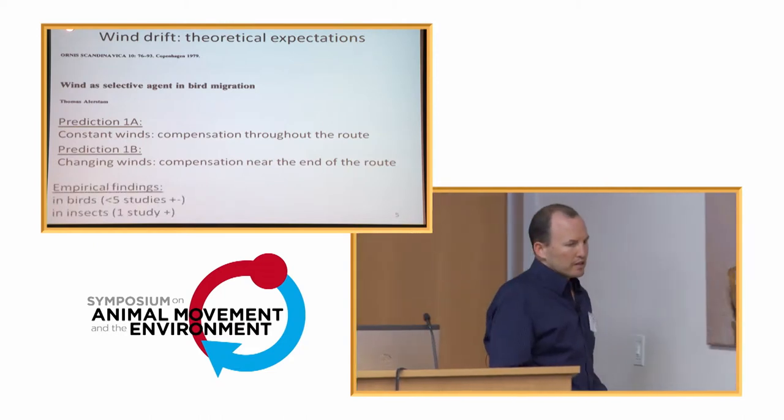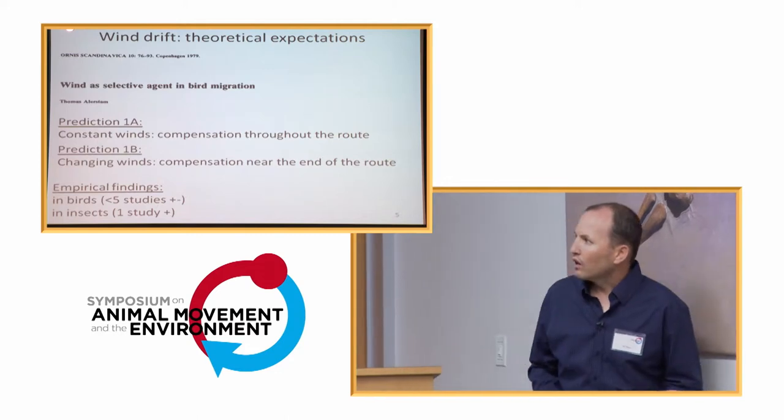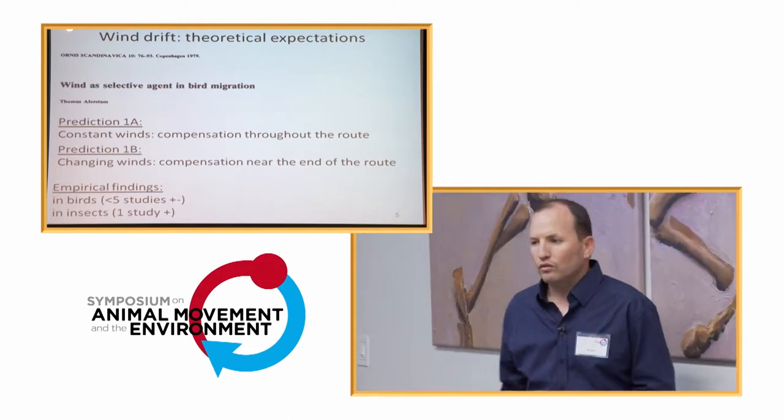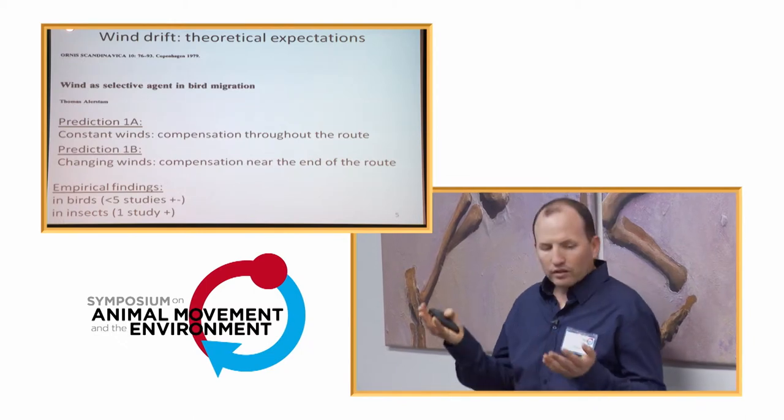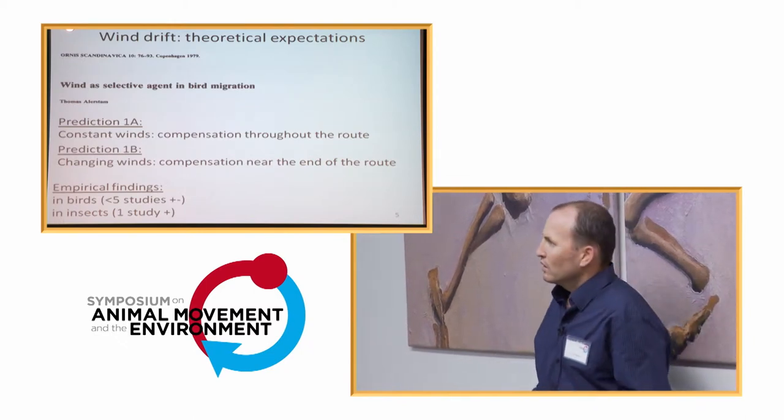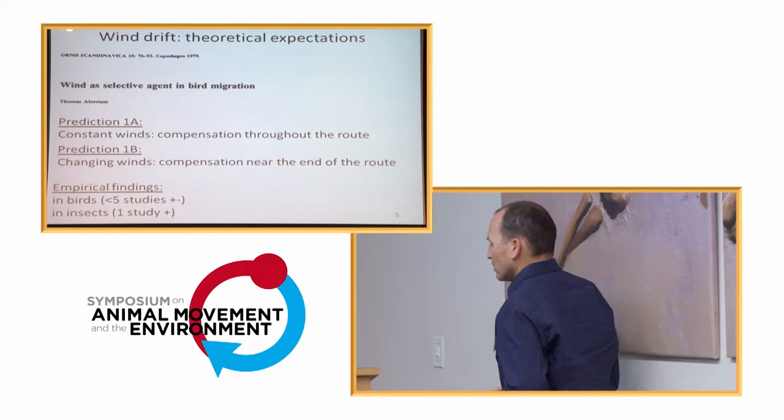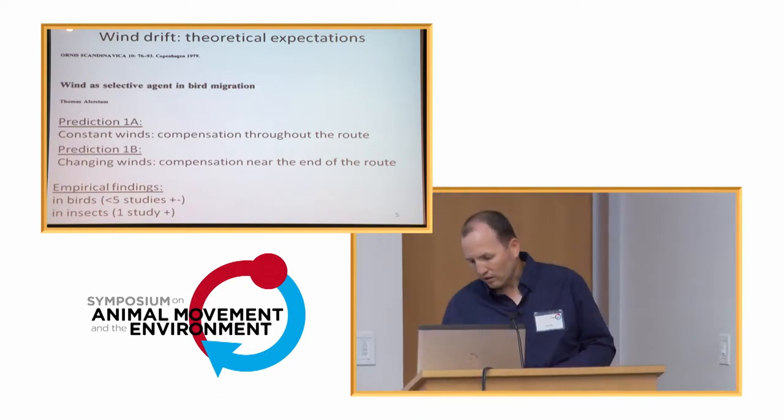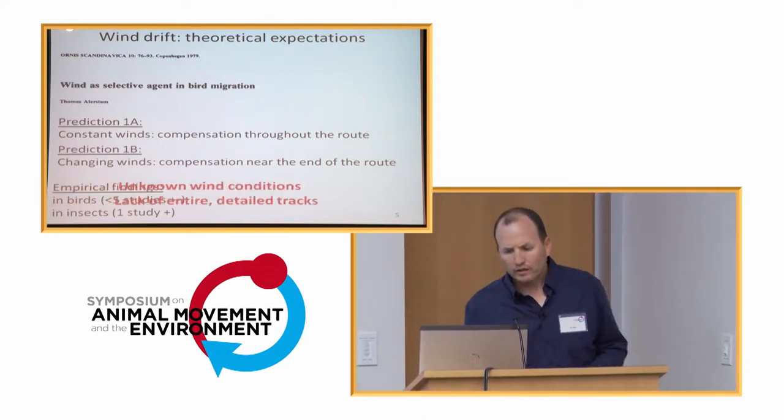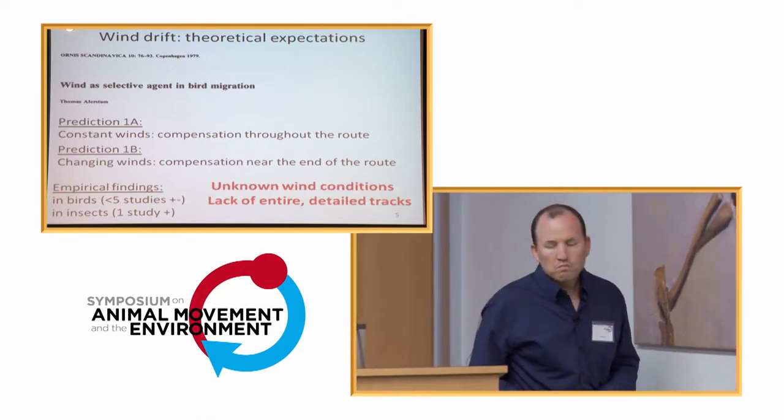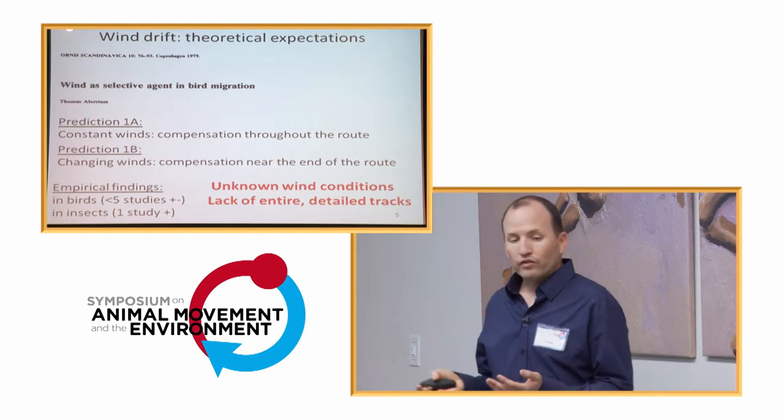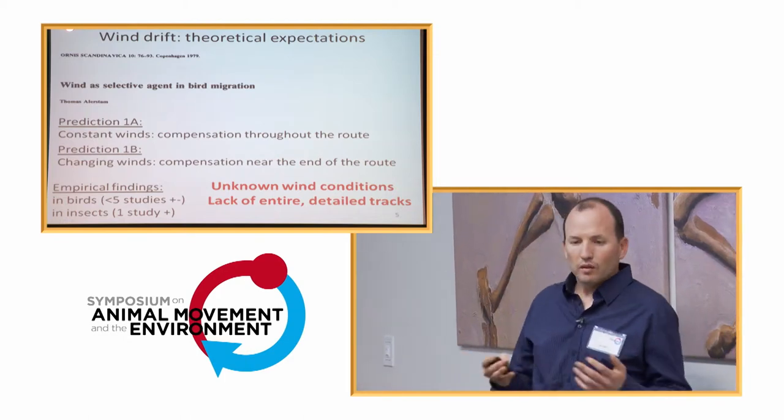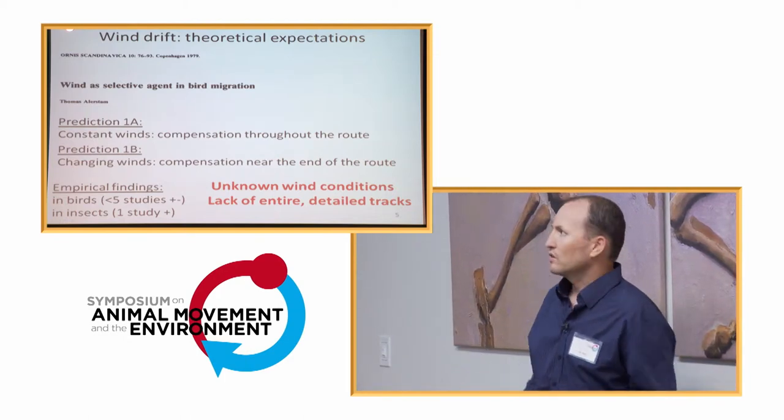So, we know that there are some empirical studies that tend to support either predictions. And there's one study in bees that actually documented compensation for winds, for sidewinds. But in most cases, there are unknown wind conditions and lack of entire and detailed tracks to enable us to actually do this kind of analysis.